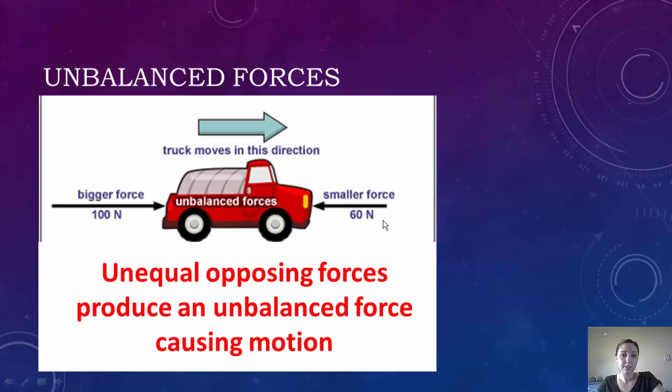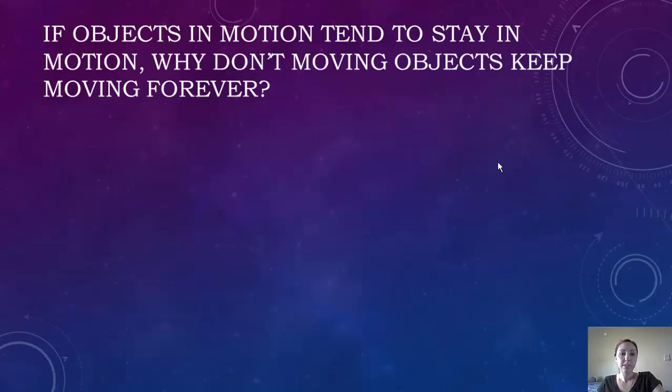For unbalanced force, on this side we have a smaller force of 60 newtons and a bigger force of 100 newtons. So unequal opposing forces produce an unbalanced force which causes motion. If you have the bigger force on this side, it's going to propel the truck to the right. So the truck is in motion with unbalanced forces.